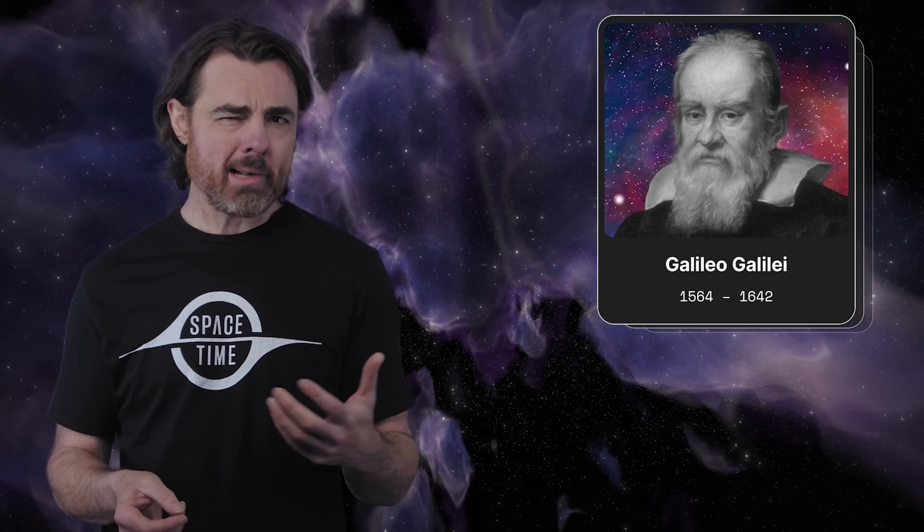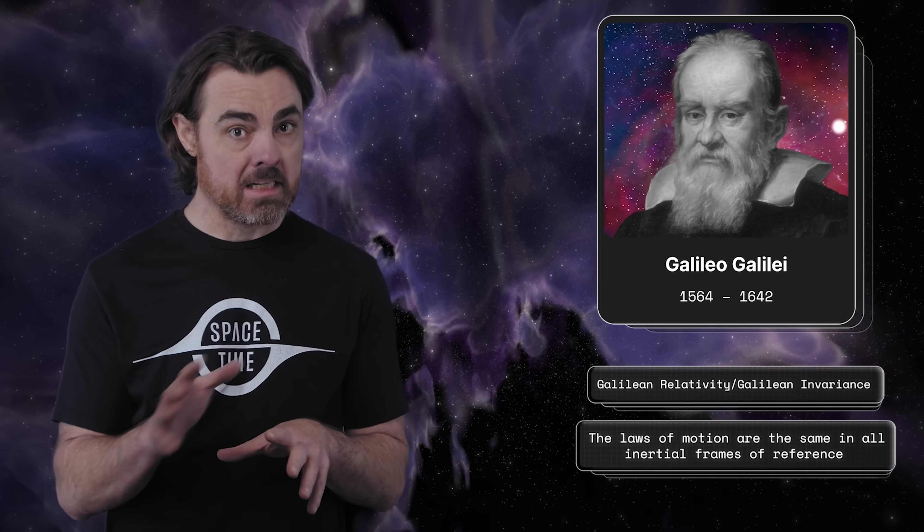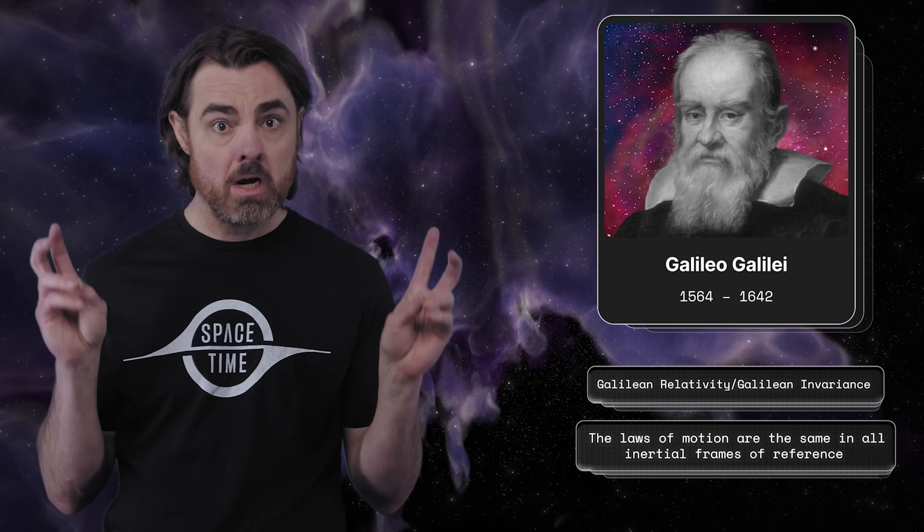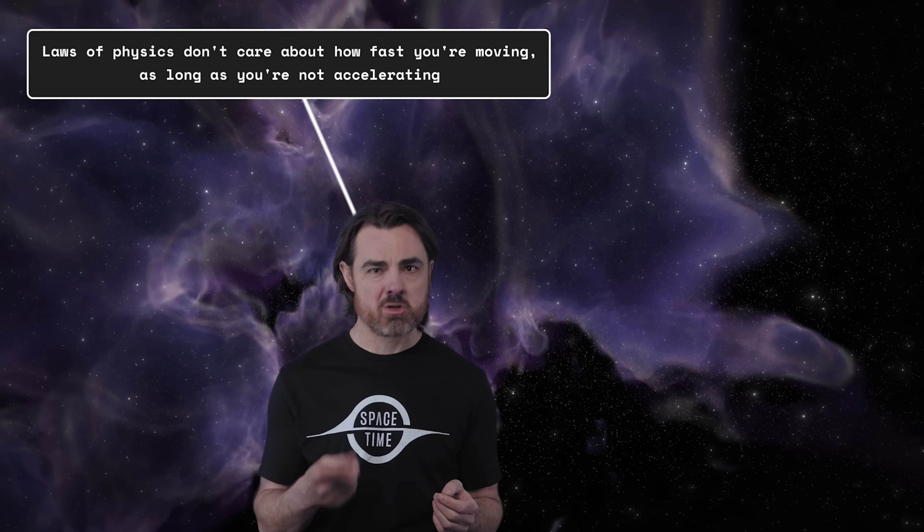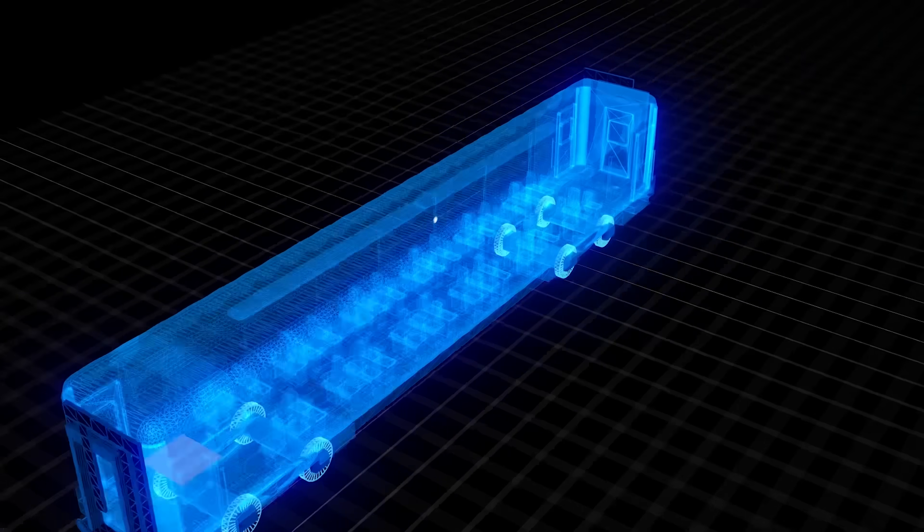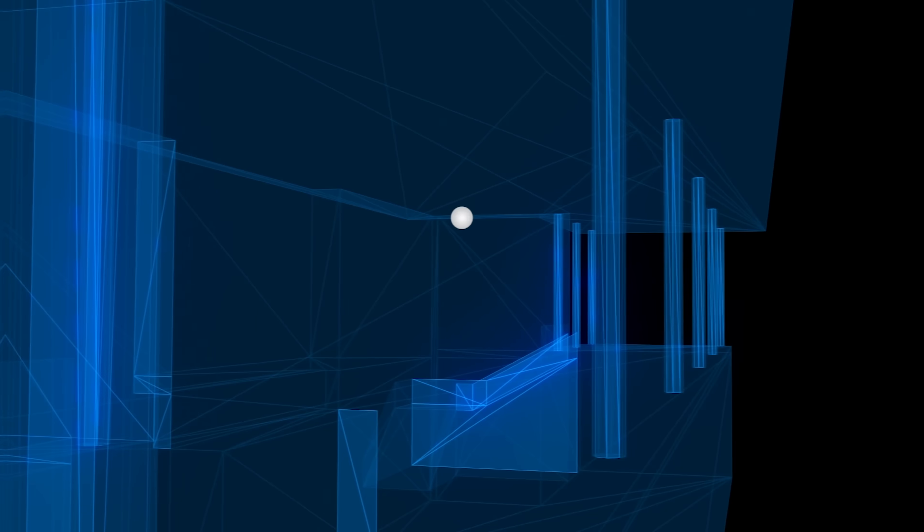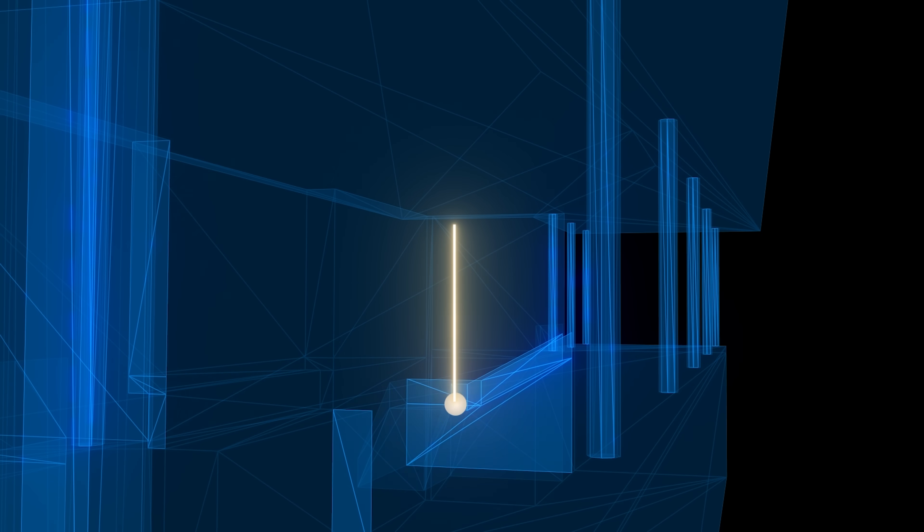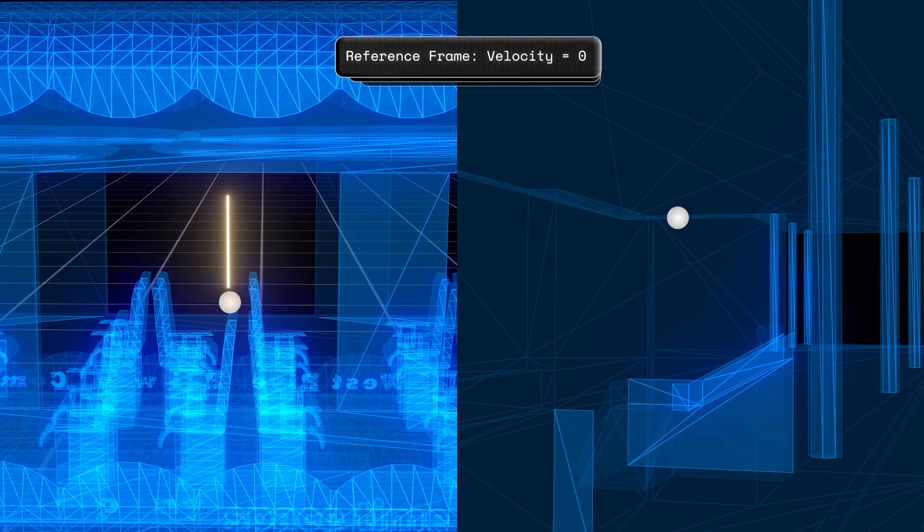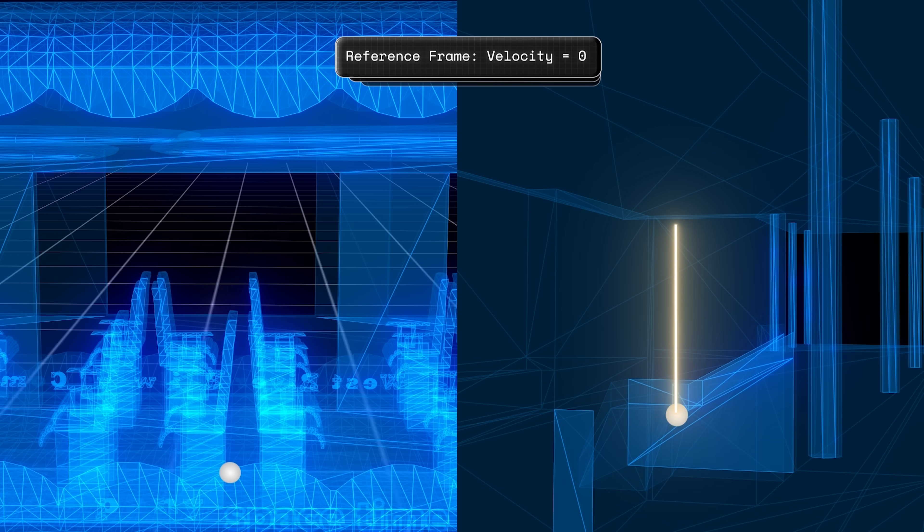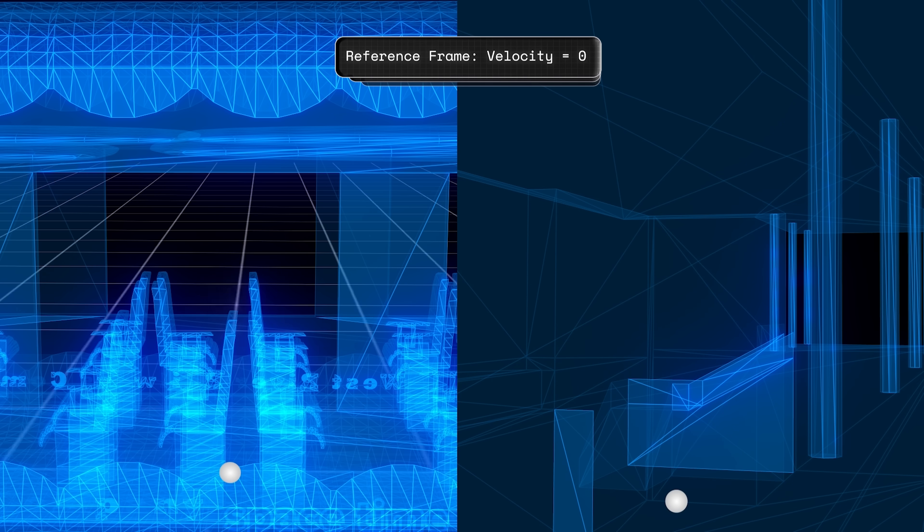A top contender for the most profound insight in the history of physics was a little idea by Galileo 400 years ago. He realized that speed is relative, in a fundamental way. Galilean relativity, or Galilean invariance, states that the laws of physics should be the same, invariant, for all inertial observers. The laws of physics don't care how fast you're moving as long as you're not accelerating. Drop a ball in a train moving at a constant speed, and the ball falls straight down from your perspective, just as it would if you were standing on the train station, again from your perspective.